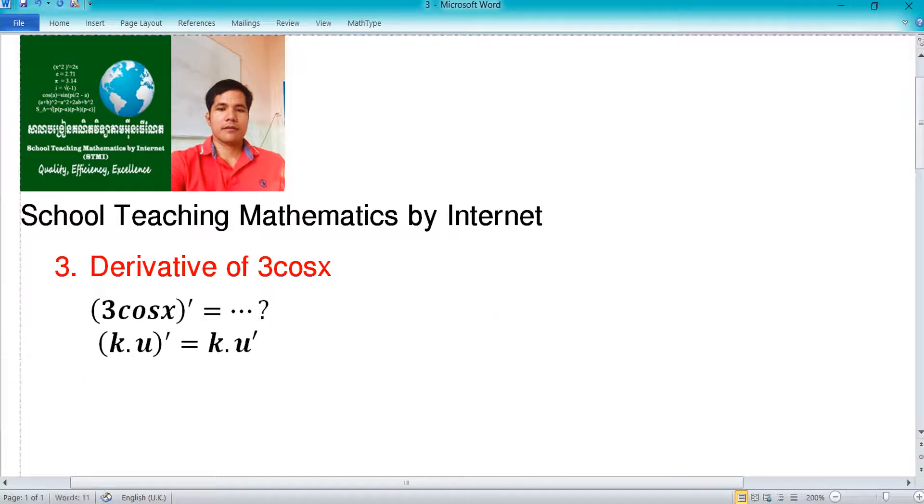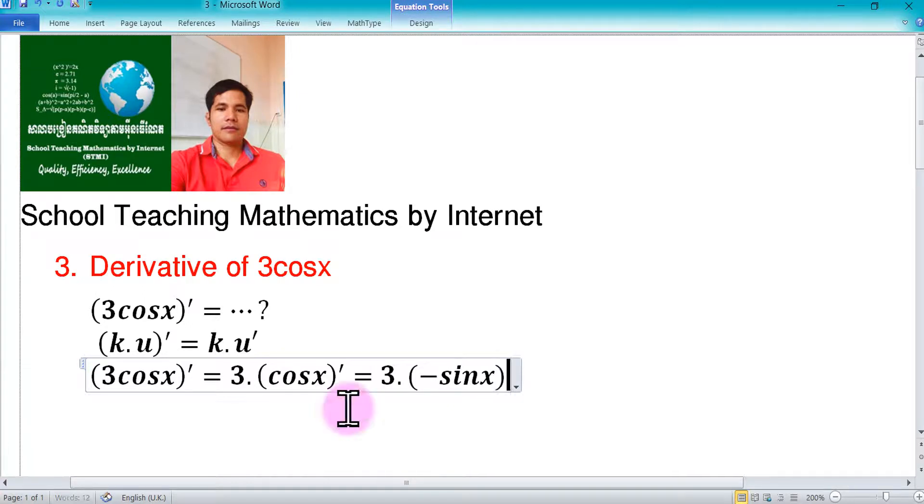And then we can see that k is equal to 3 and u is cosine x. In here, you can complete this and then you can make it equal to 3, because 3 is the real number, and then it is cosine x prime. After that, 3 times minus sine x, because derivative of cosine equals minus sine x.